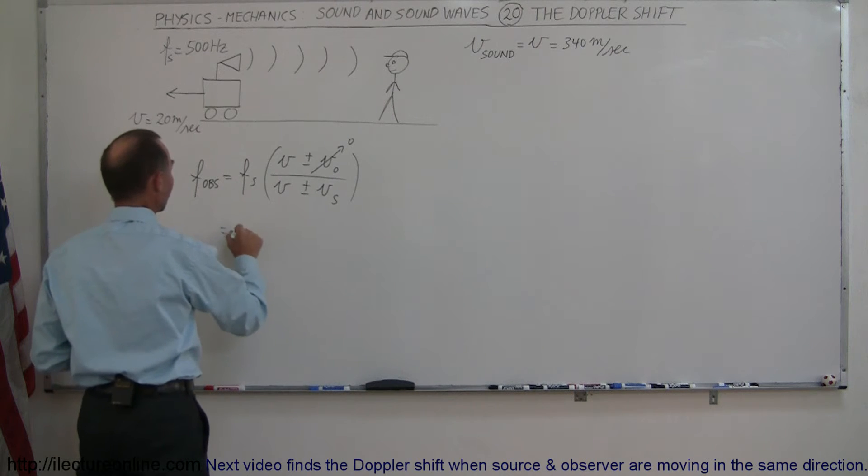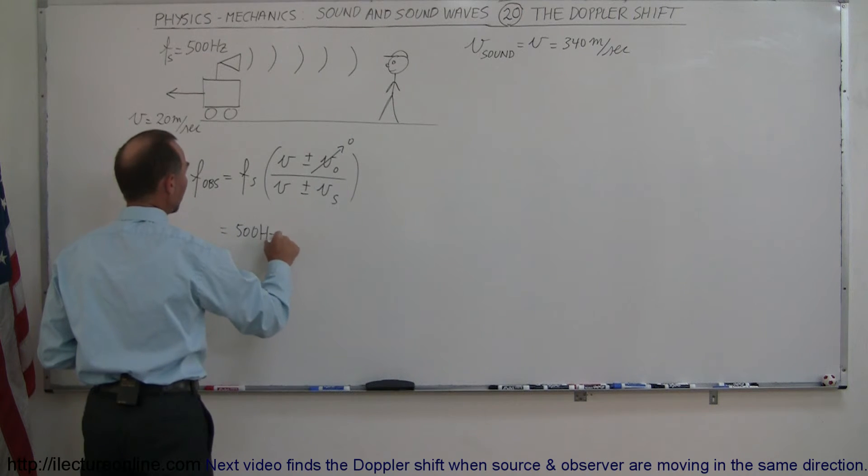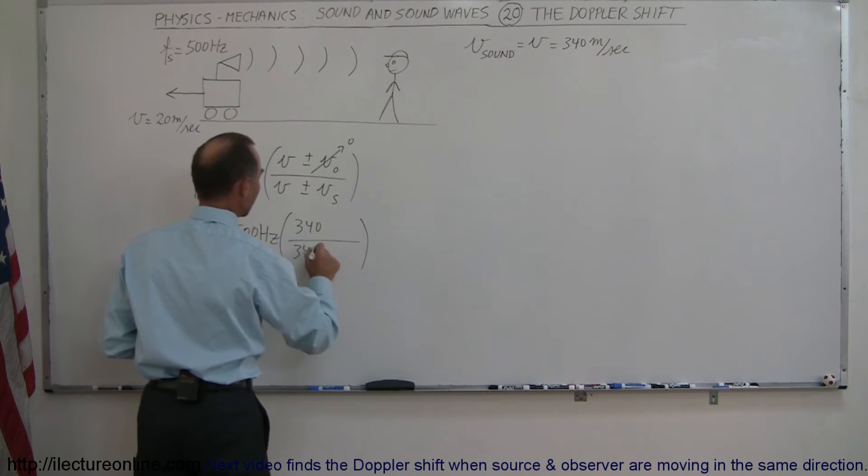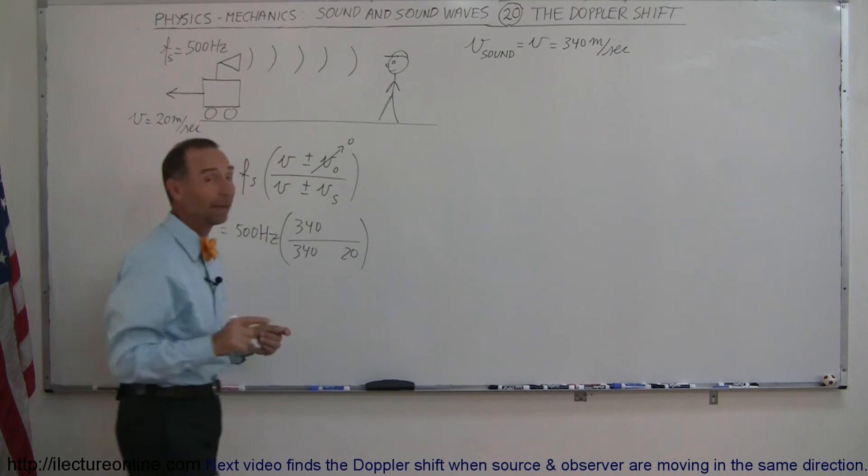This is going to be 500 hertz times the ratio. We'll put 340 plus zero, so I don't have to write that. 340 here. We're going to put 20 there. Now the sign.